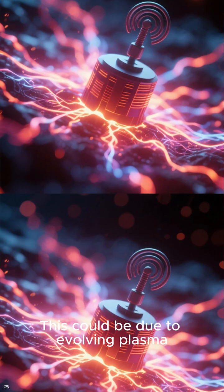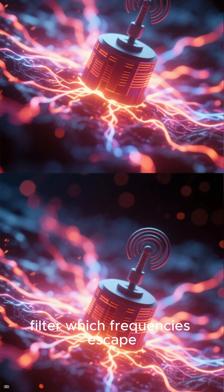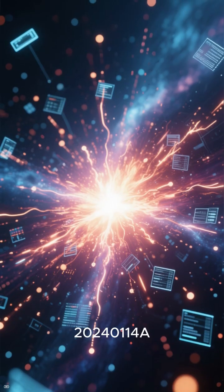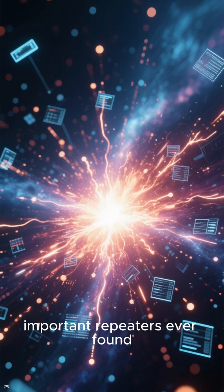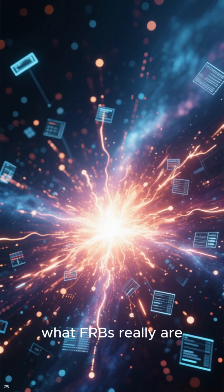This could be due to evolving plasma around the source, like synchrotron self-absorption or scattering events that filter which frequencies escape. FRB 20240114A is quickly becoming one of the most important repeaters ever found, and each new burst brings us one step closer to understanding what FRBs really are.